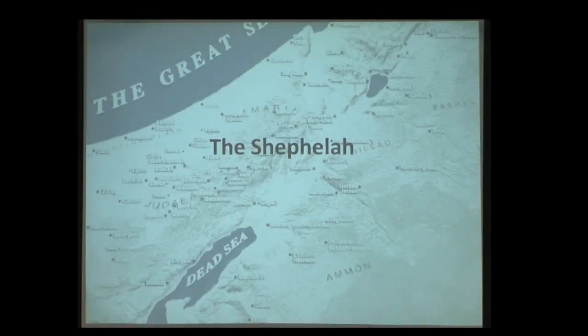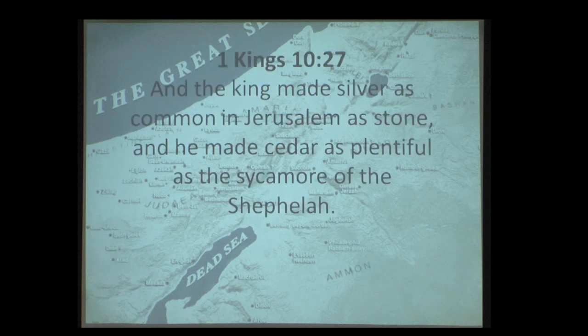We'll go to our next region: the Shephelah, a Hebrew word meaning 'lowlands,' used 22 times in the Hebrew Bible. 1 Kings 10:27 says that Solomon — whose Hebrew name is Shlomo — 'made silver as common in Jerusalem as stone.' There are a lot of stones in Jerusalem — they're everywhere. Why did this happen? Because Solomon was able to bend all the traffic to his advantage, controlling the routes and taxing accordingly — making Jerusalem's golden age.